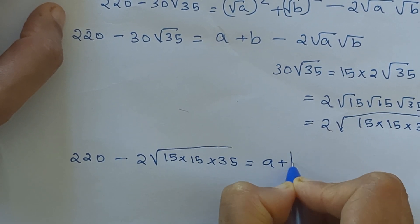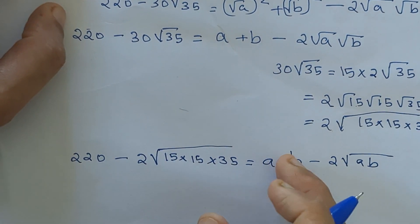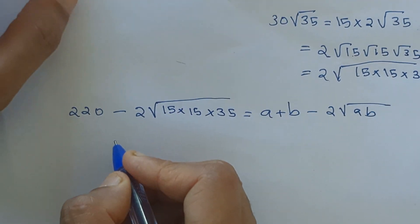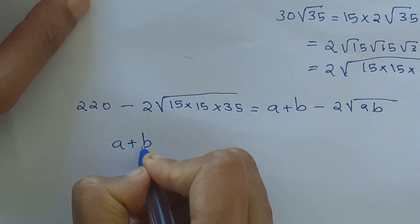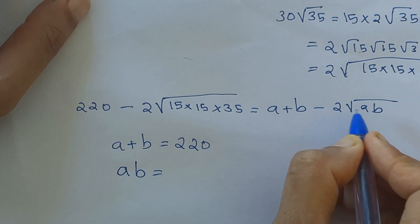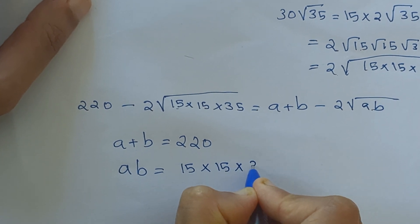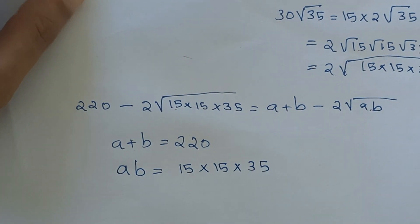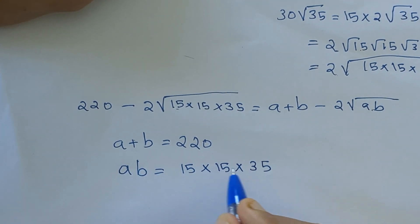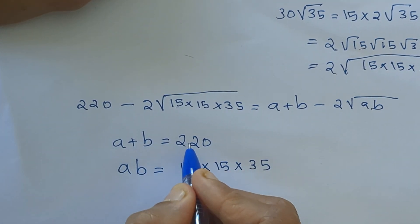From this comparison, we can say that a plus b equals 220, and ab equals 15 × 15 × 35. We have to find two numbers such that when multiplied we get 15 × 15 × 35, and when added we get 220.